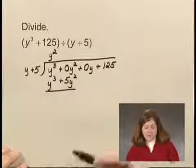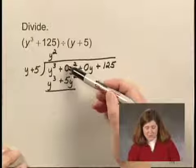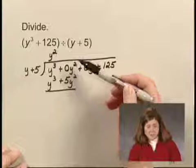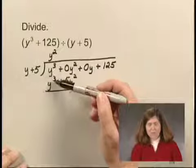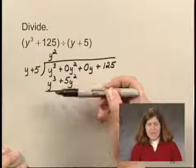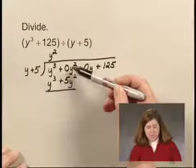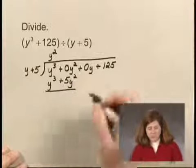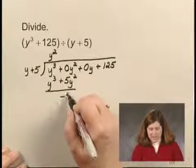Now I subtract. And if you see, I wrote a zero y squared, it's easy to see that I subtract y cubed minus y cubed, which is zero, and then zero y squared minus 5y squared, which gives me negative 5y squared.